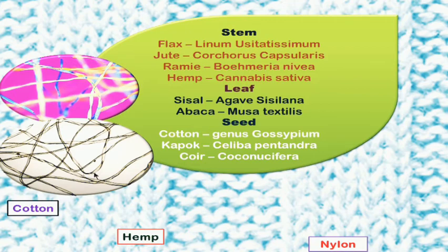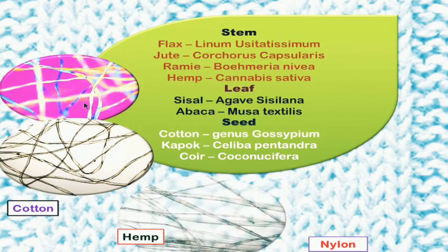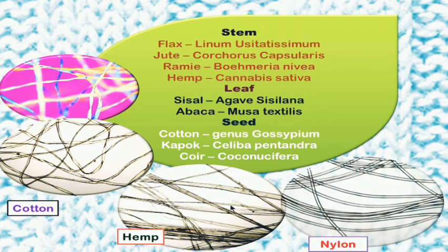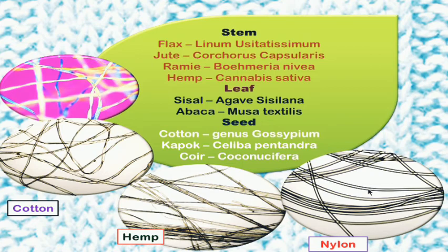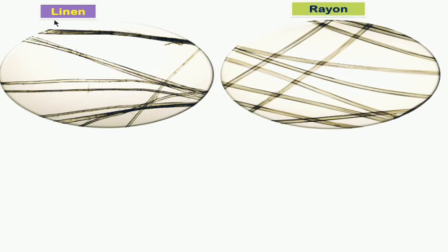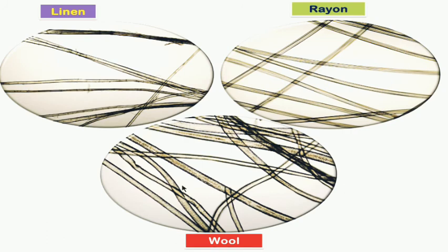Under the microscope, cotton fiber shows characteristic twists. Nylon or any polymer cross-section gives a triangular shape. Linen comes from the flax plant, Linum usitatissimum. Wool, which comes from sheep, shows a medulla under the microscope since it is animal hair.